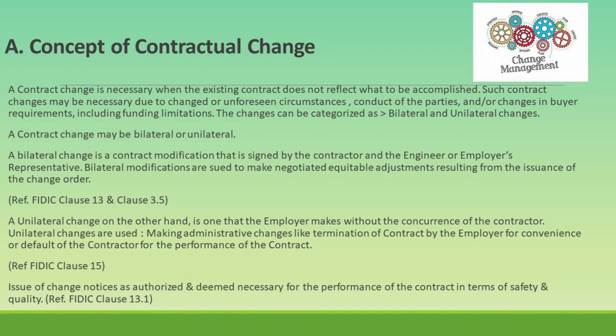Contract changes can be categorized as either bilateral or unilateral. A bilateral change is a contract modification signed by both the contractor and the engineer or employer's representative. These modifications are used to make negotiated equitable adjustments resulting from the change order. This process is covered under FIDIC Clause 13 — Variations and Adjustments — which allows for changes to the work, adjustments to the contract price, and extensions of time. It includes procedures for the engineer to issue instructions, for the contractor to propose variations, and for valuing variations.